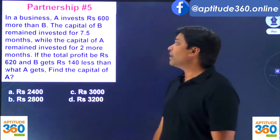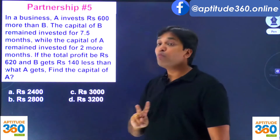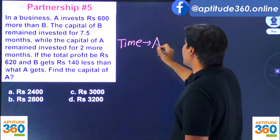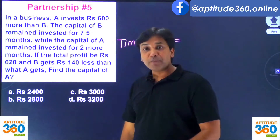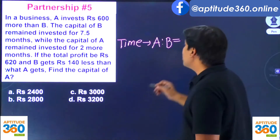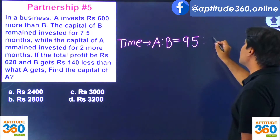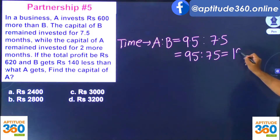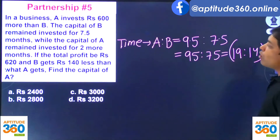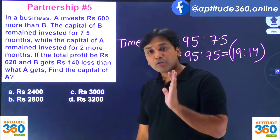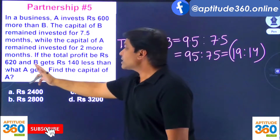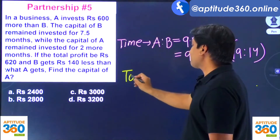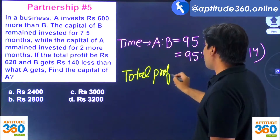The capital of B remained invested for 7.5 months while the capital of A remained invested for 2 more months, meaning A is there for 9.5 months. So the ratio of time for A to B is 9.5 to 7.5, which simplifies to 95 to 75, or 19 to 14. The ratio of time periods has been found. It also says that the total profit is 620, meaning the total profit of A and B combined is 620.